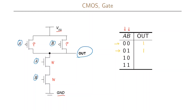Moving to the next row where A equals one and B equals zero: since A equals one, the P transistor with input A will not be conducting, while the one with input B will be conducting. For the N-type transistors, since A is one, that transistor will be conducting while the one with input B will not. So again we have a short circuit between the voltage supply and the output with no connection to ground, giving us an output of one.